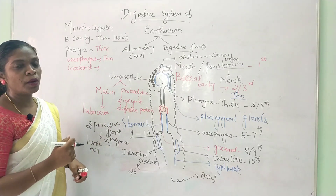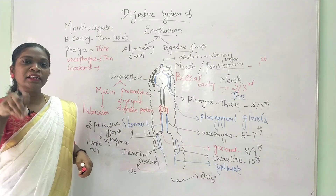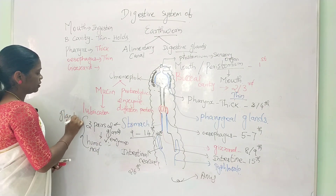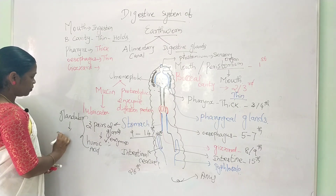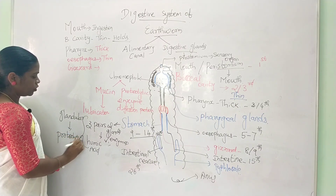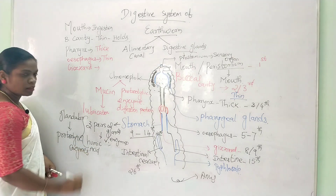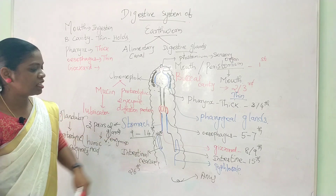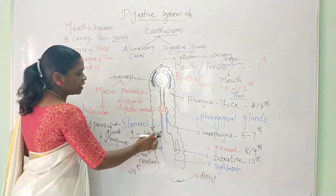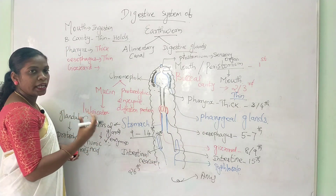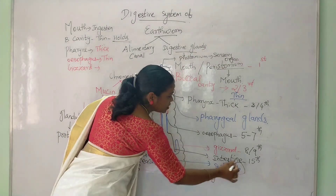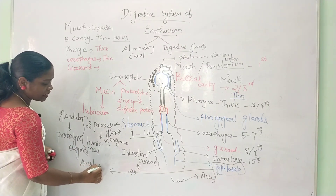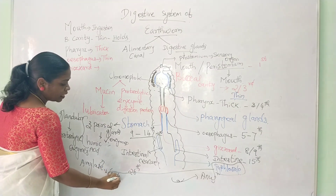The stomach is glandular. The glandular cells secrete a proteolytic enzyme to digest protein. In the intestine, the Typhlosole structure increases the absorption area so nutrients are absorbed. Amylase enzyme is also present in the Typhlosole, which aids in the digestion of carbohydrates.